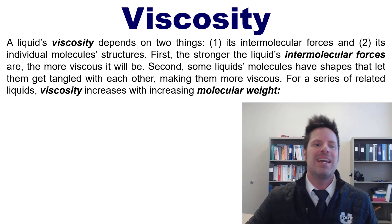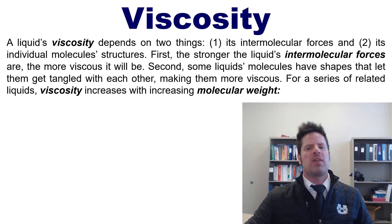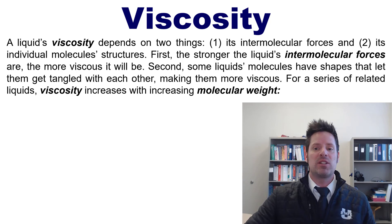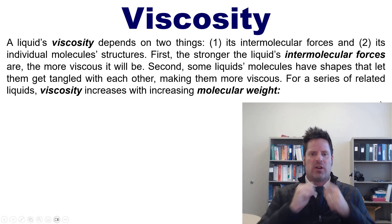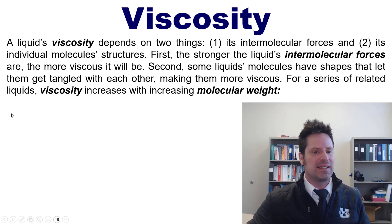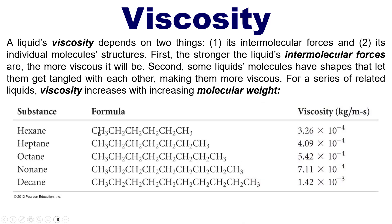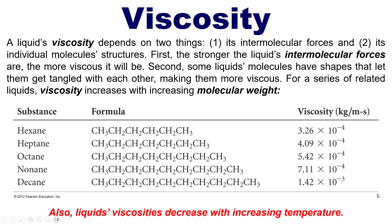A liquid's viscosity depends on two things: its intermolecular forces, discussed in our previous video, and its individual molecular structures. First, the stronger the liquid's intermolecular forces, the more viscous it will be. Second, some liquid molecules have shapes that let them get tangled with each other, making them more viscous. For a series of related liquids, viscosity increases with increasing molecular weight, as shown in this table from our text. All of these have the same type of intermolecular force — London dispersion forces — so the difference is molecular weight: more carbons and hydrogens as we go down the series, and viscosity increases.